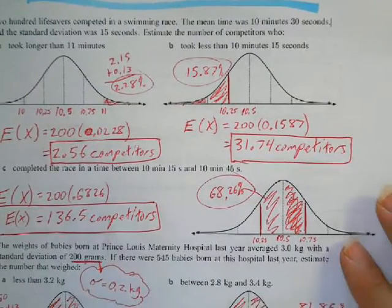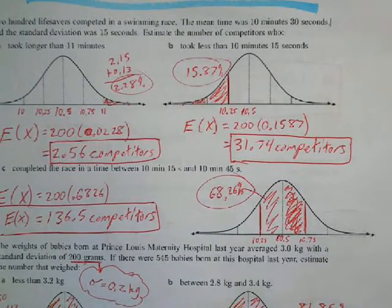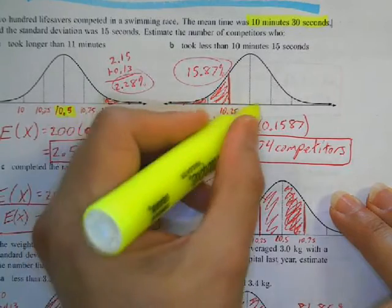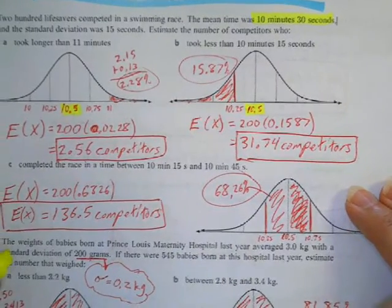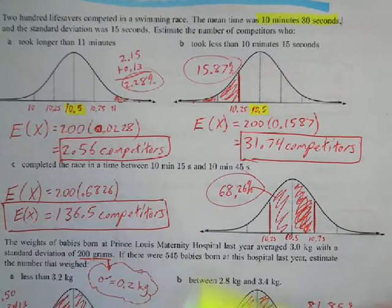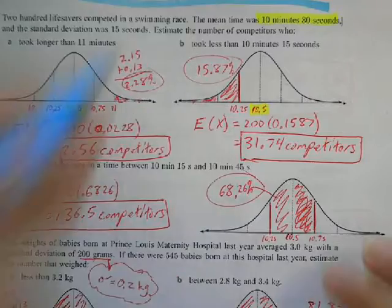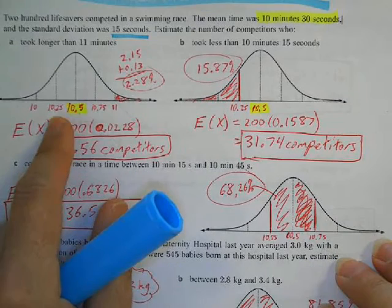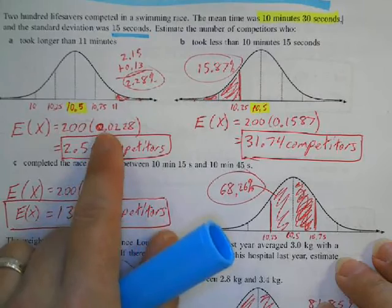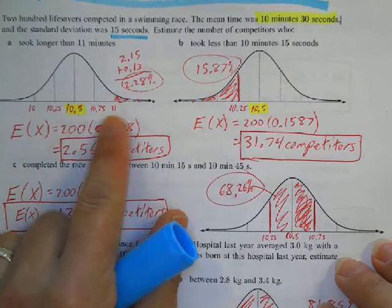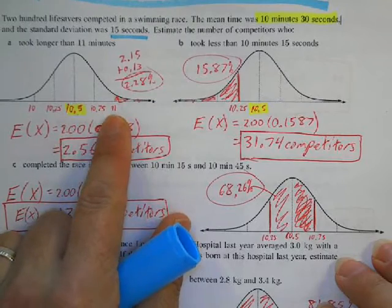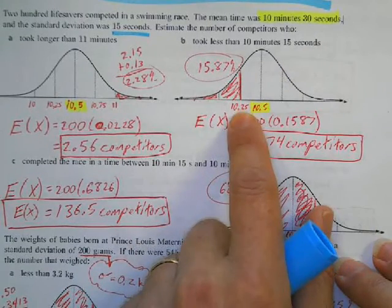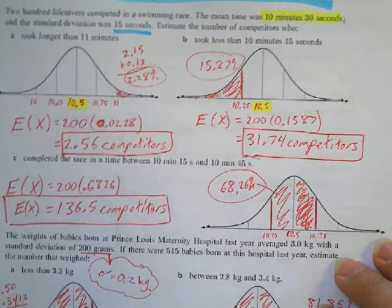The next question uses the same approach. The mean time is 10 minutes 30 seconds, written as 10.5 minutes. The standard deviation is 15 seconds, which is 0.25 minutes. So I subtract 0.25 and add 0.25 to mark each standard deviation on the curve. For 'took longer than 11 minutes,' I add 0.25 twice from the mean to reach 11. For 'less than 10.25 minutes,' that value sits one standard deviation below the mean.